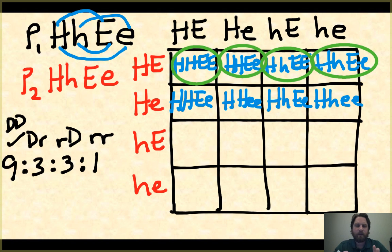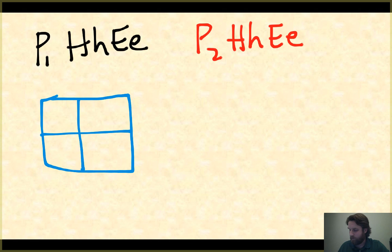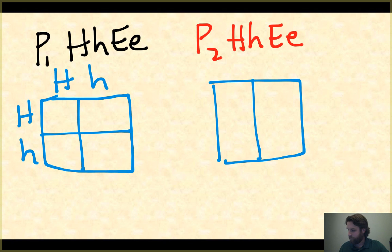Or what you can do instead is, we've got parent 1 that is heterozygous for both, and parent 2 also heterozygous for both. What you can do is you can make one Punnett square for each gene that we're looking at. Let's start by doing the Punnett square for just the H's. Parent 1 has one copy of each. And then we can do another Punnett square for just the earlobes.